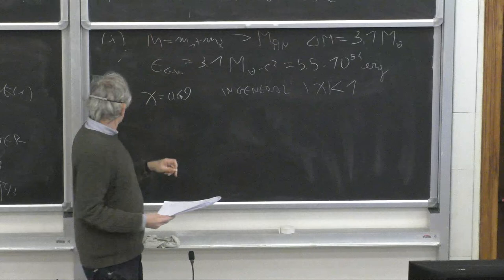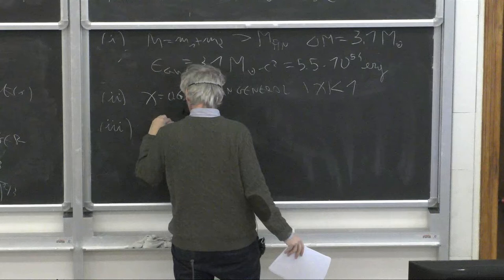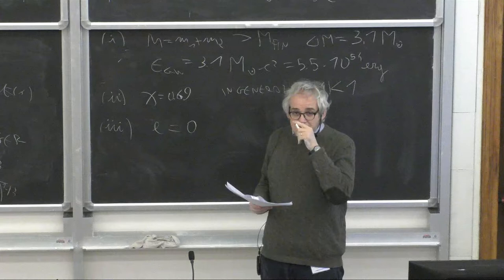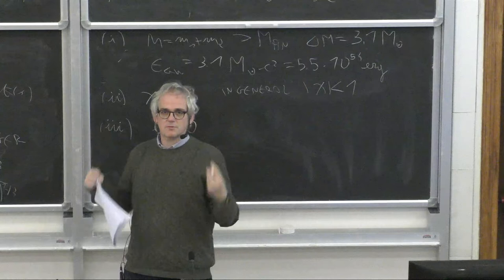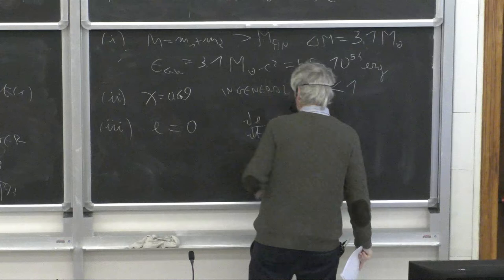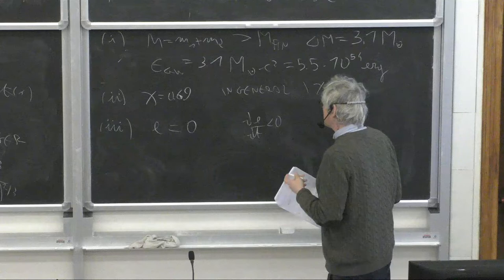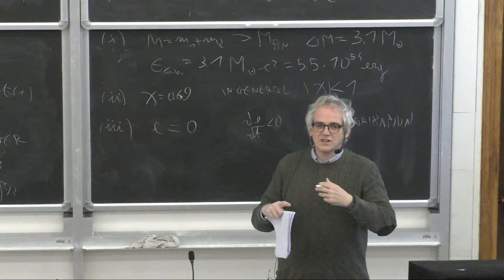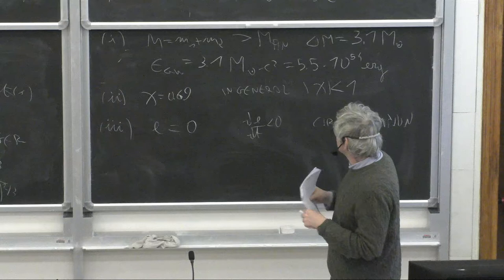Third remark: the eccentricity of the orbit is essentially zero — compatible with zero within the error. This is expected by theory: if one models the inspiral from much earlier, one finds that de/dt is always negative, meaning the eccentricity decreases during the inspiral and the orbit circularizes. The inspiral we observed lasted a few tens of seconds, but the full inspiral process takes much longer, during which the orbit becomes perfectly circular.